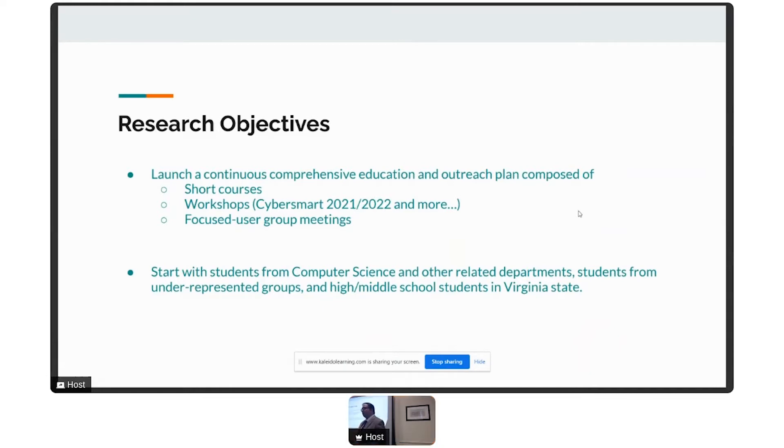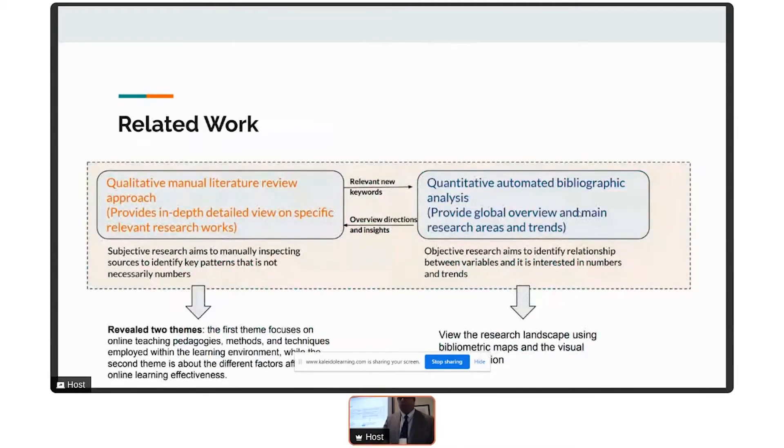To define our direction, where we are and where we are going, we did some related work. Our approach was a mixed method approach that combined qualitative literature review and also we did some bibliographic analysis which requires some quantitative analysis. In this part, we identified based on looking at relevant papers two main themes relevant to this area. The first theme focuses on online teaching pedagogics, methods, or techniques, and the other theme focuses on different factors that affect the learning effectiveness or experience.